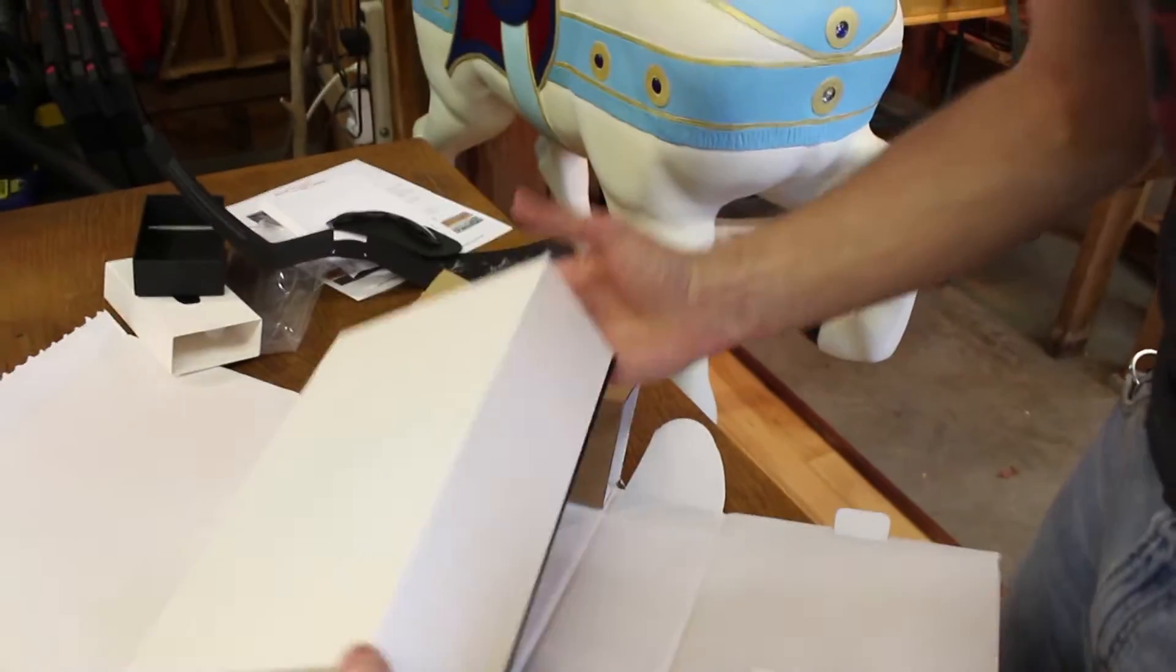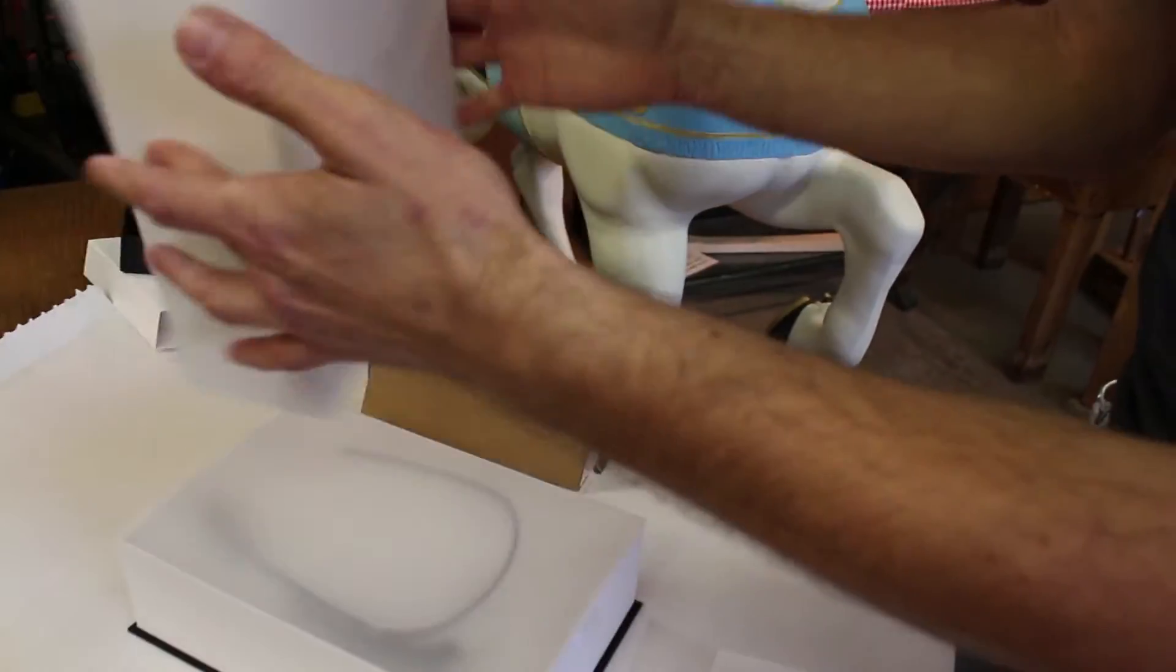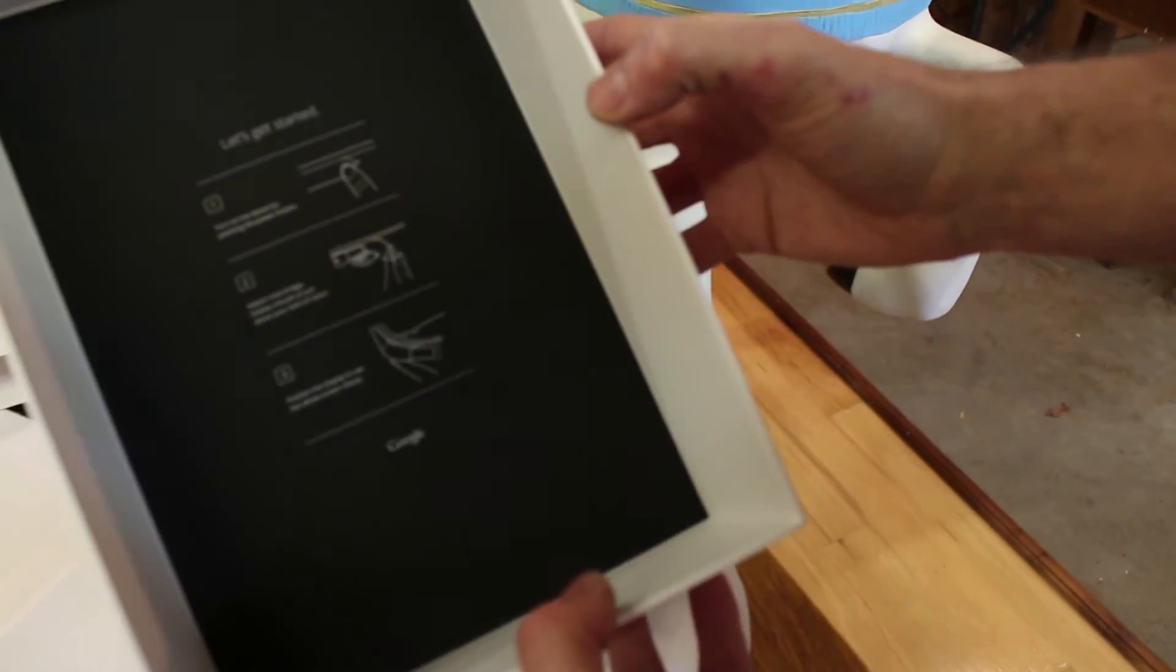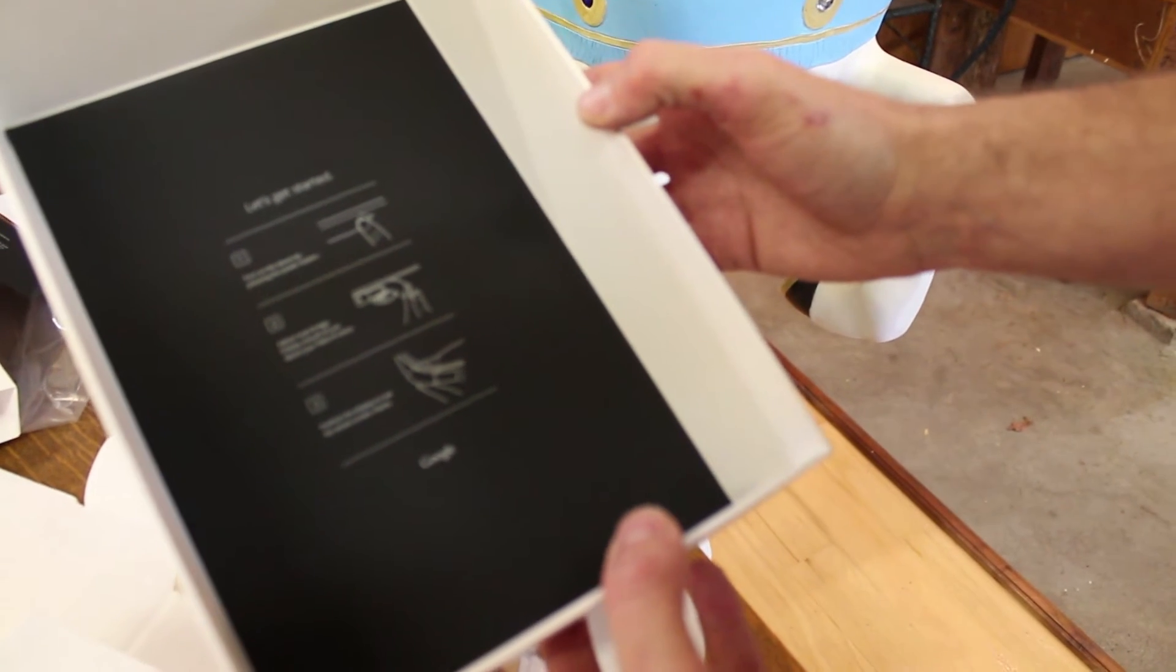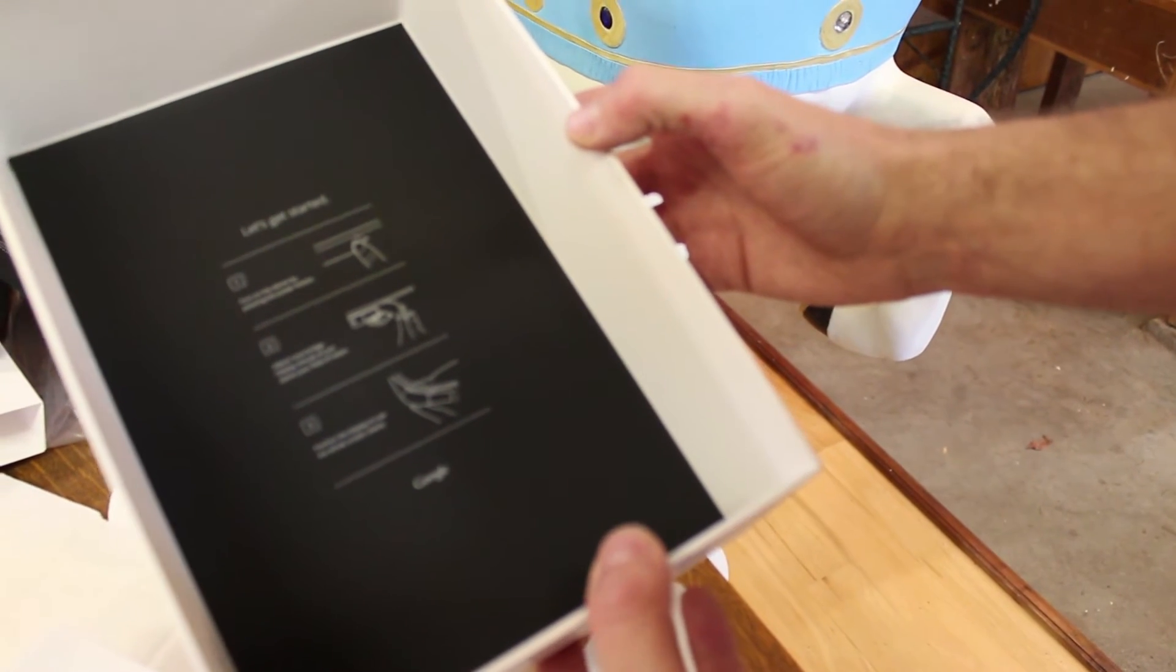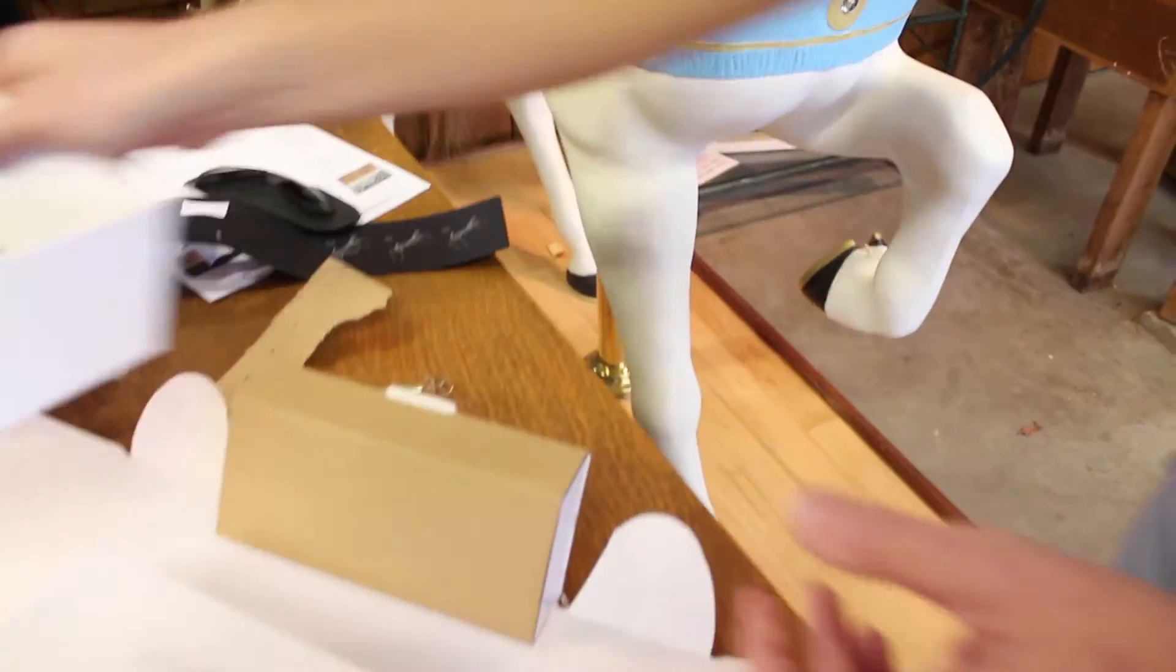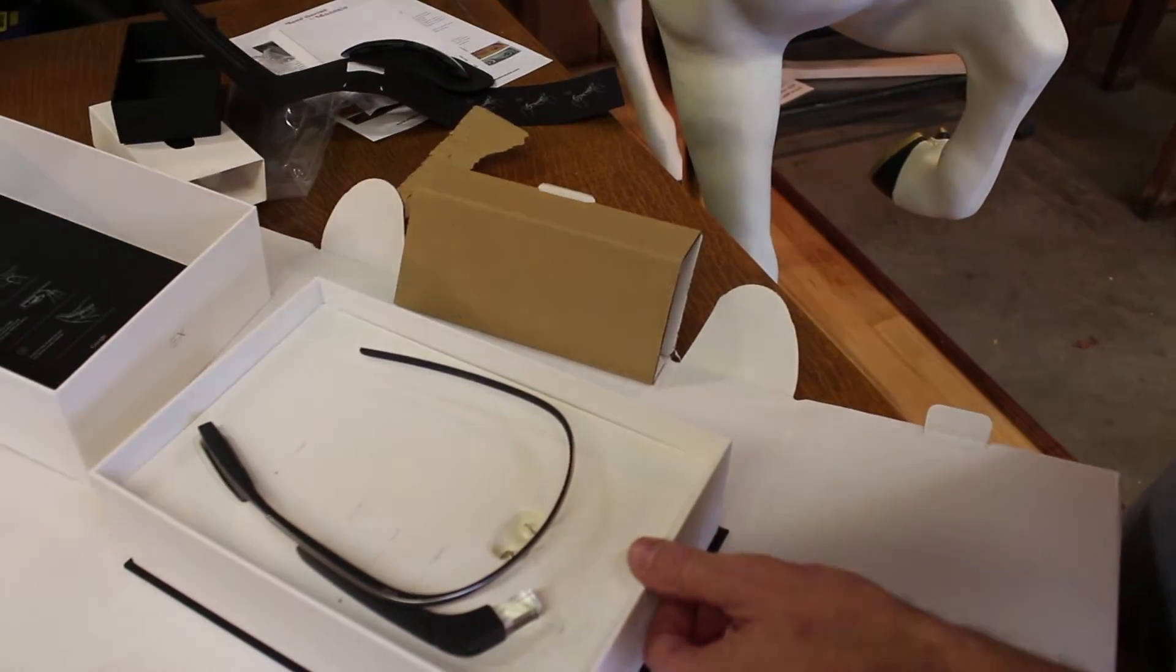All right. So I think we open it like this. All right. Let's get started. Turn on the device by pressing the power button. Adjust the nose piece. Display should sit just above your field of vision. Position the display to see the whole screen clearly. A really nice box. There it is.